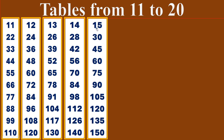Fifteen times table. Fifteen ones are fifteen. Fifteen twos are thirty. Fifteen threes are forty-five. Fifteen fours are sixty. Fifteen fives are seventy-five. Fifteen sixes are ninety. Fifteen sevens are one hundred and five. Fifteen eights are one hundred and twenty. Fifteen nines are one hundred and thirty-five. Fifteen tens are one hundred and fifty.